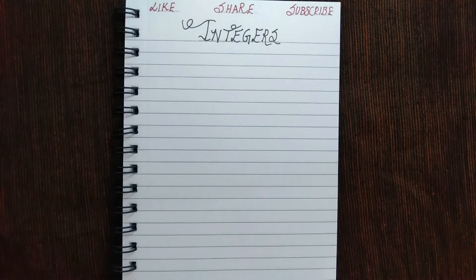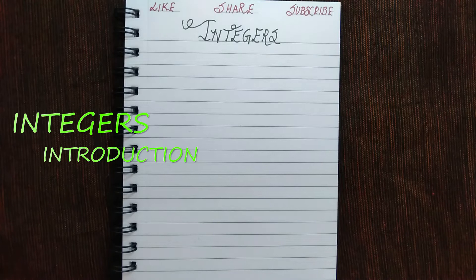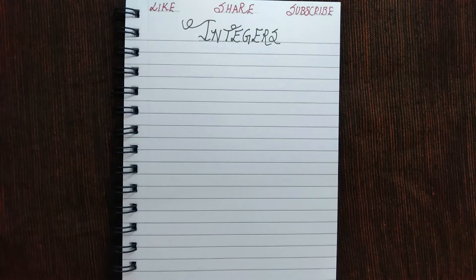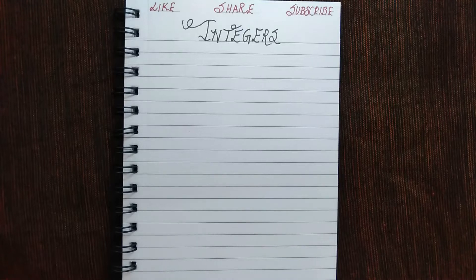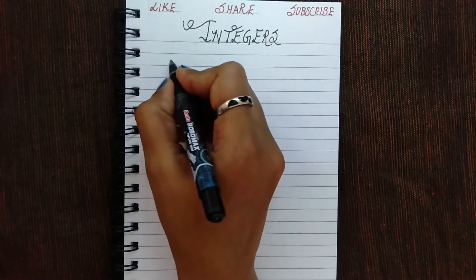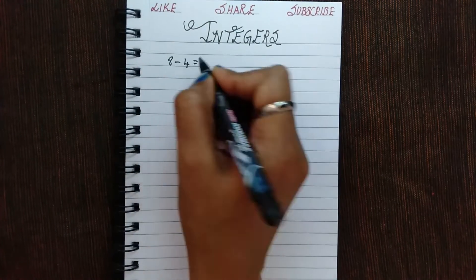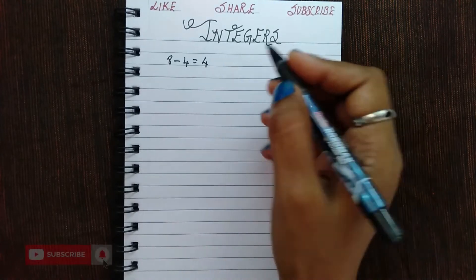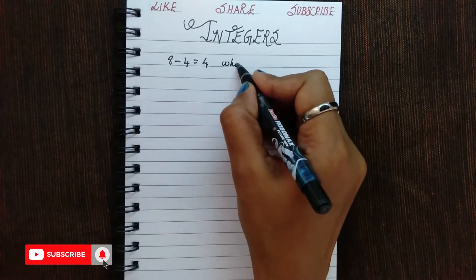Hello everyone, welcome back to Know Edge. This is going to be a short video to give you an introduction on integers. Generally, when a smaller number is subtracted from a greater number, what is the answer we get? Say for example, 8 minus 4 will give you 4, where 4 is the whole number.